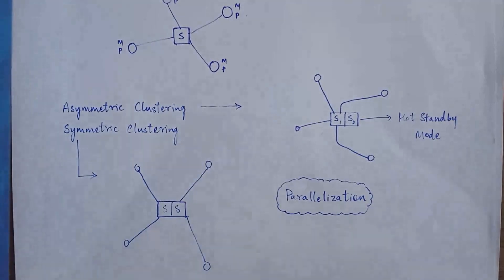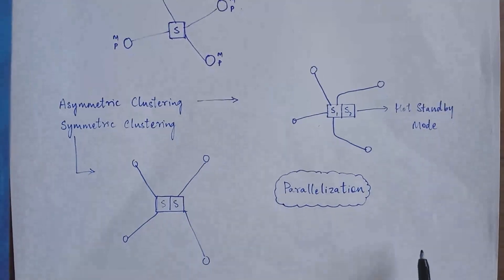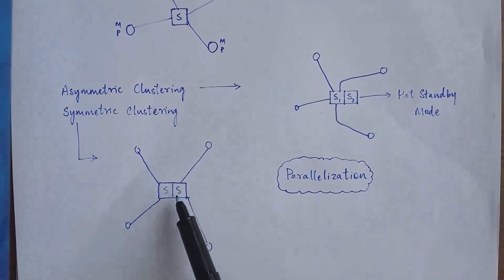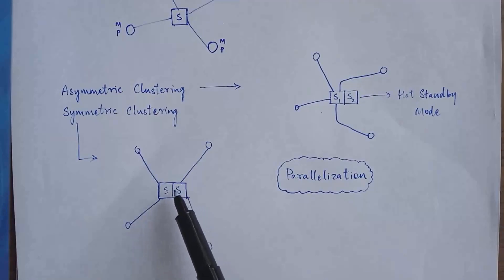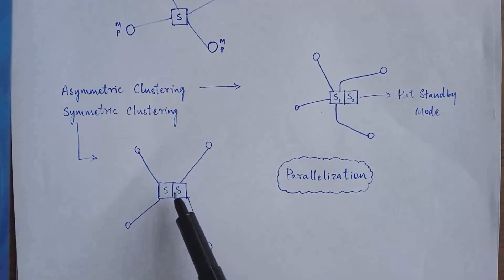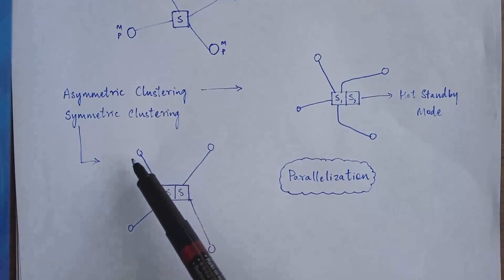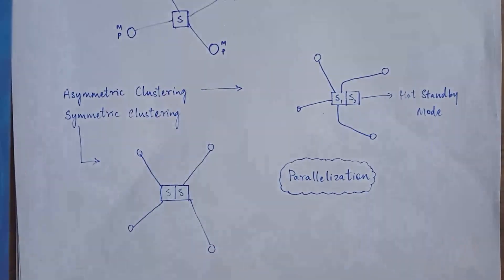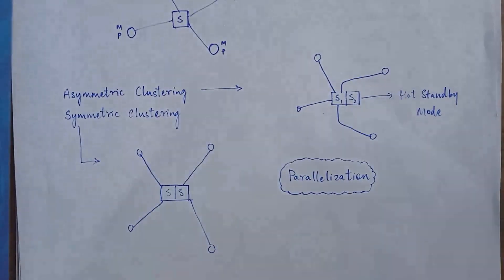In symmetric clustering, we again have two servers. In this case, both servers look after each other and both servers provide all services to the clients. That is how symmetric and asymmetric clustering differ.